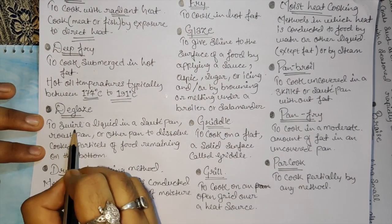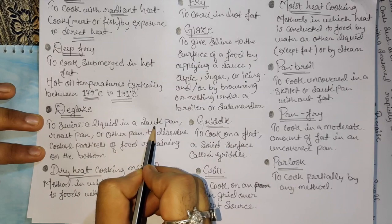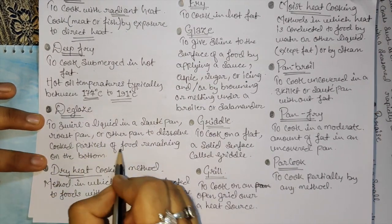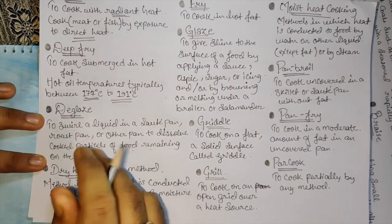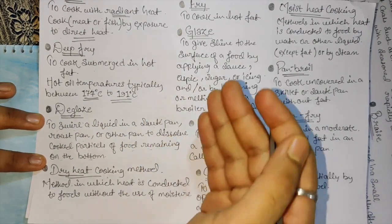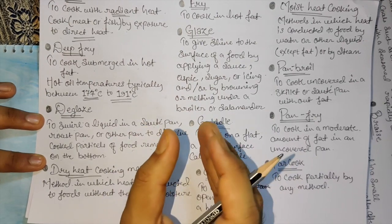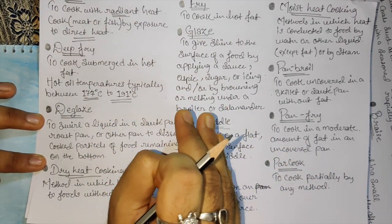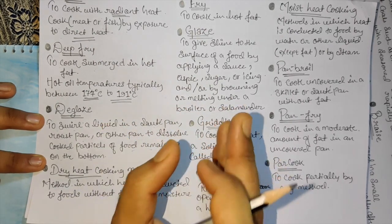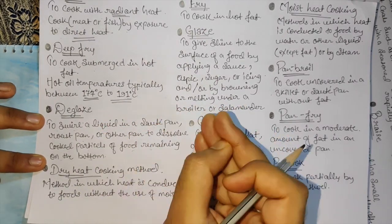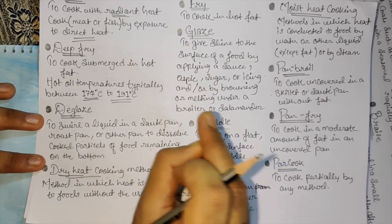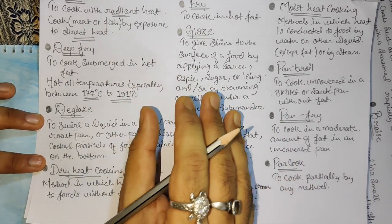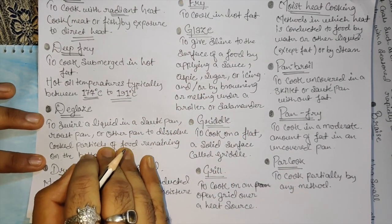Deglaze - to swirl liquid in a sauté pan, roasting pan, or other pan to dissolve cooking particles that remain on the bottom. When you cook something in the pan, there's a residue. We have to add extra liquid, and we use it as sauce. That is actually called deglaze.